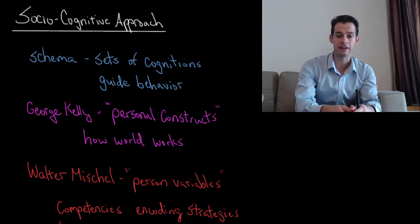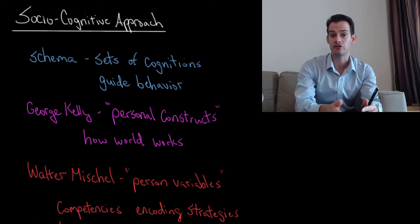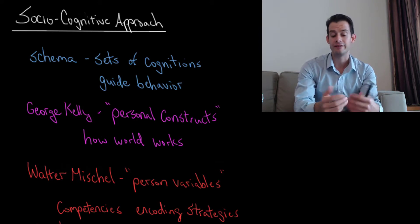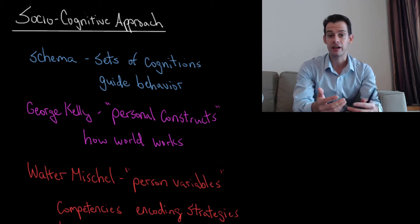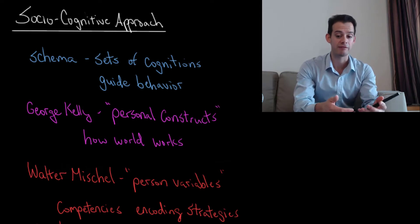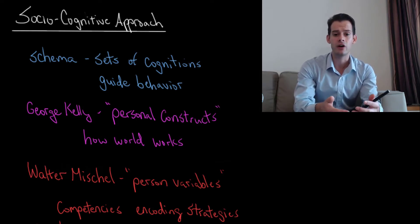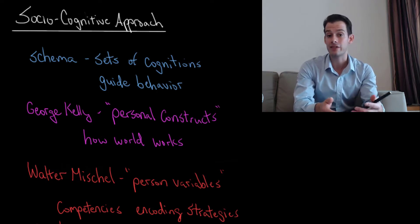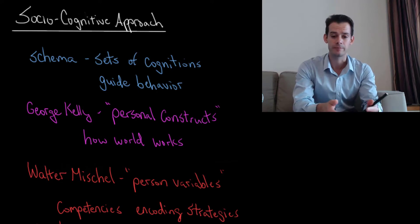George Kelly proposed what he called personal constructs. This was the idea that we all have different schema, different memories, and different ways of processing information and interpreting situations. All of these personal constructs are going to influence how we think the world works, and in turn how we behave in that world.